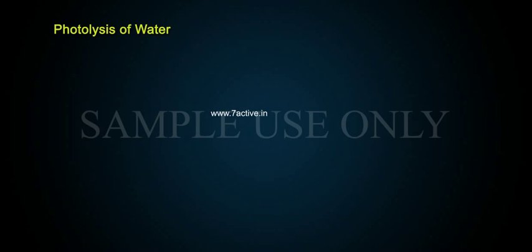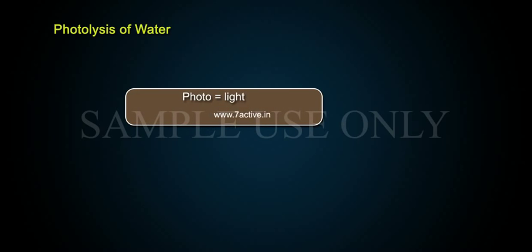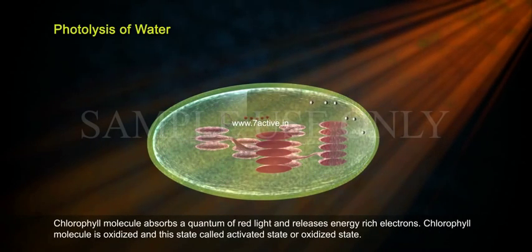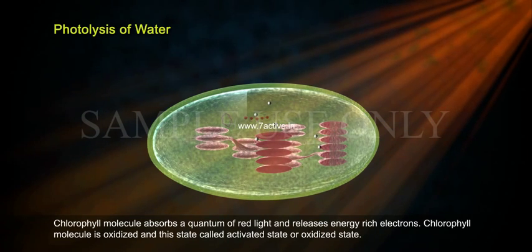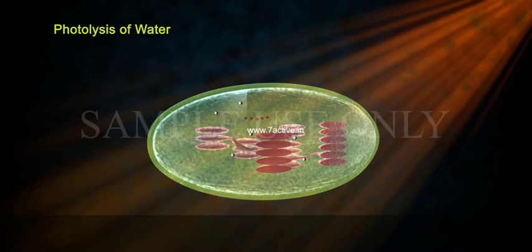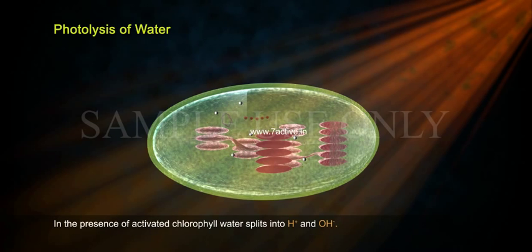Photolysis of water: 'photo' means light and 'lysis' means splitting. The splitting of the water molecule into H+ and OH- occurs in the presence of manganese and chloride ions, activated by chlorophyll. The chlorophyll molecule absorbs a quantum of red light and releases energy-rich electrons, becoming oxidized — this state is called the activated or oxidized state. In the presence of activated chlorophyll, water splits into H+ and OH-.